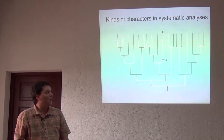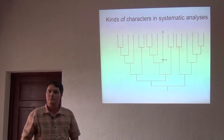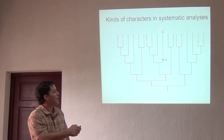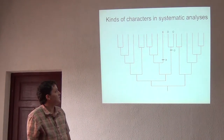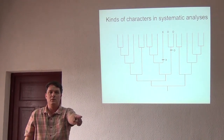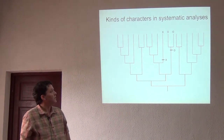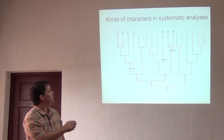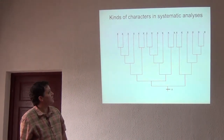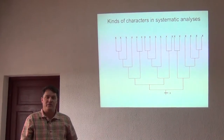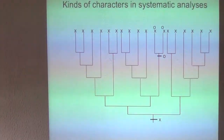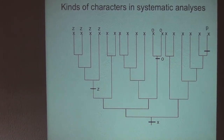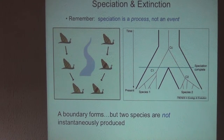Here's the final test of these basic principles. What kind of character is X? Autapomorphy — exactly, because it's uniquely derived in one species and not shared with anything else. How about O? Synapomorphy, right? Because it's shared and it's derived. Again, shared by these four taxa and derived with reference to the base of the tree. Symplesiomorphy — everyone got that one. And the last one — synapomorphy again: unique, shared, and derived. You guys are experts in this.